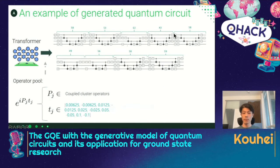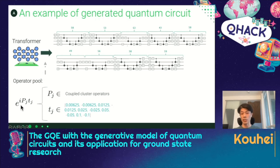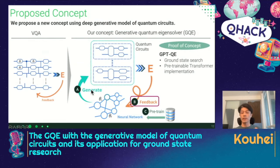This is an example of a quantum circuit generated by transformer. These tokens 58 and 53 are a sequence of tokens, and those tokens are mapped to circuit components. In this example, we utilize as an operator pool the exponential i*P_j*T_j. As far as we know, this is the first quantum circuit generated by a transformer.